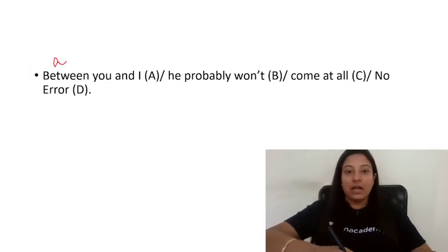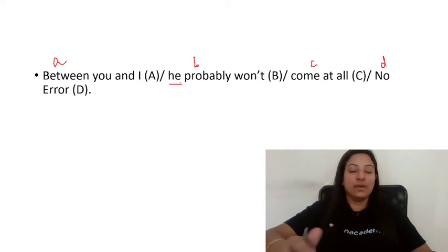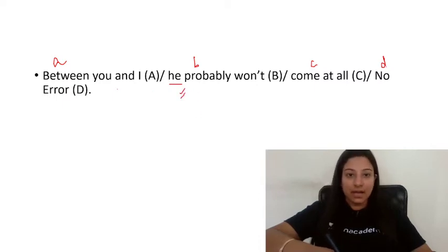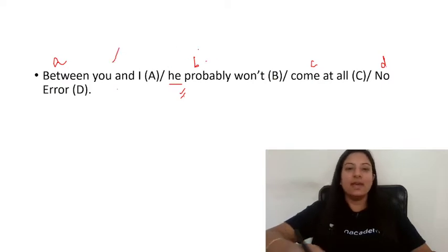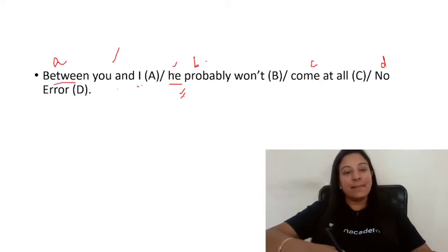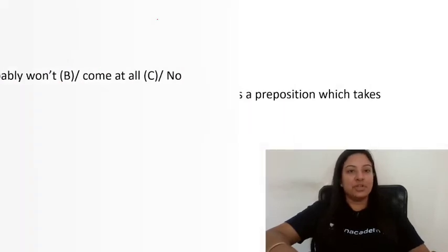Next question: 'Between you and I, he probably won't come at all.' Here, when you use 'between', you use the accusative case, so 'me' will be used, not 'I'. So the answer is option number A.